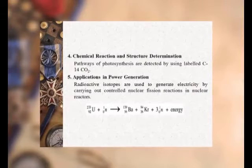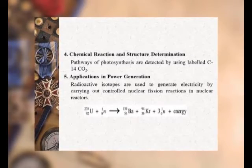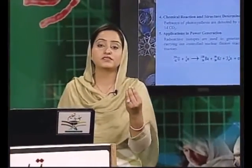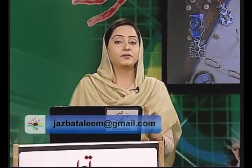سب سے major application power generation میں ہے۔ یورینیم پر neutron کی bombardment کرائی جاتی ہے تو اس میں سے barium، krypton اور تین neutrons نکلتے ہیں اور ساتھ ساتھ بہت زیادہ energy بھی release ہوتی ہے۔ یہ energy پانی کو boil کر کے steam بناتی ہے اور پھر steam engines چلتے ہیں جن سے turbines move کرتی ہیں اور electricity پیدا ہوتی ہے۔ Students یہ تھی isotopes کی uses۔ ہم نے اس chapter میں atom کے بارے میں، اس کی discovery کے بارے میں اور اس کے sub-atomic particles کے بارے میں پڑھنے کی کوشش کی۔ I hope آپ کو سمجھ آئی ہوگی، اس کو اچھے طریقے سے memorize کریں۔ Allah hafiz۔